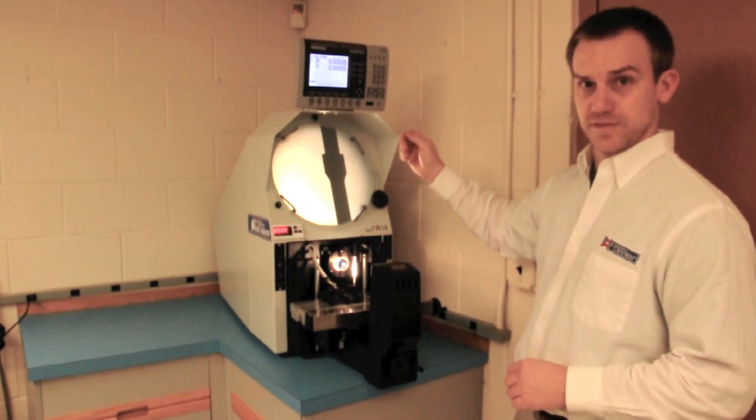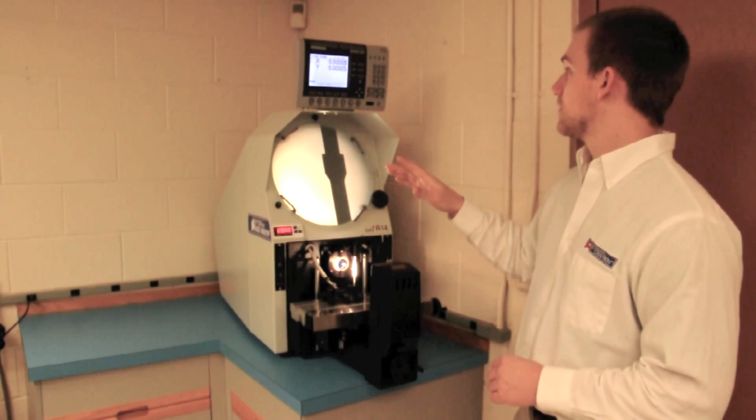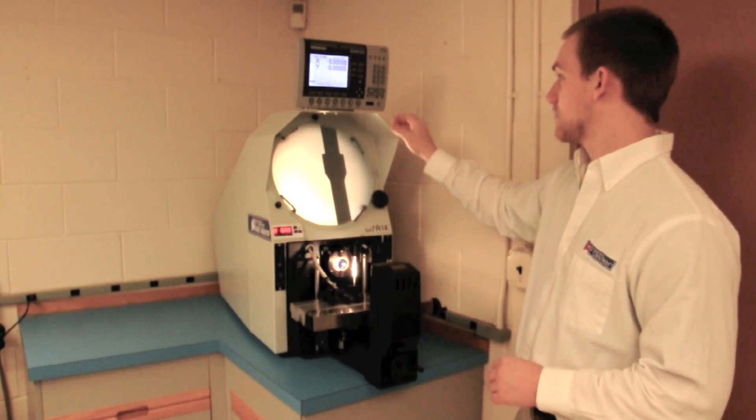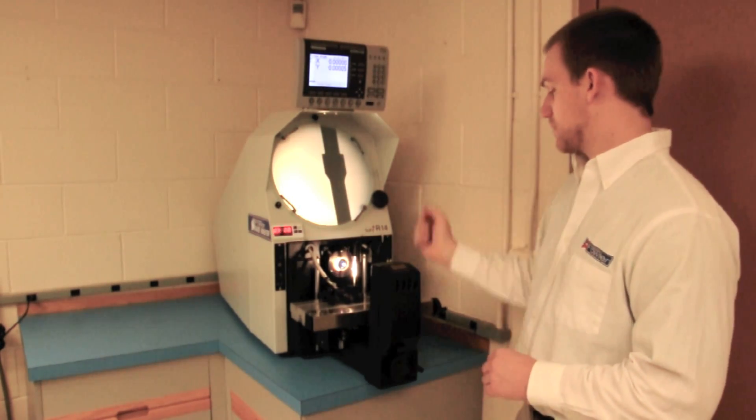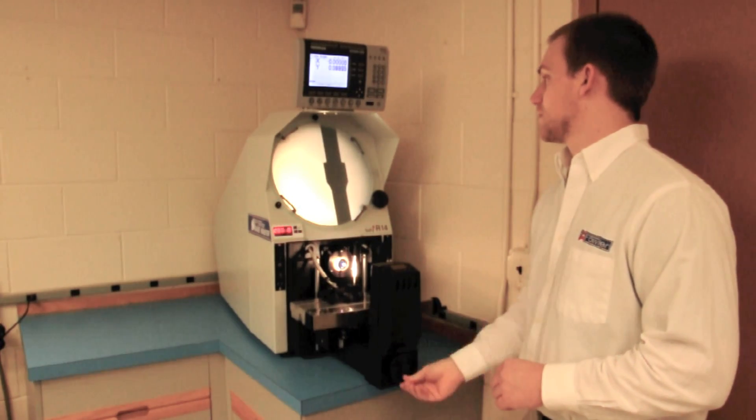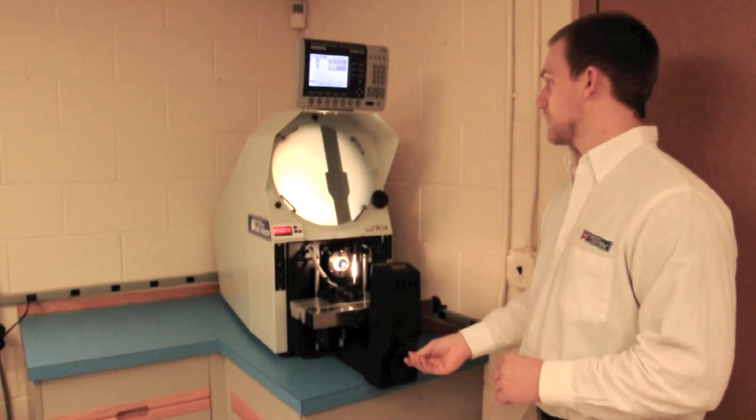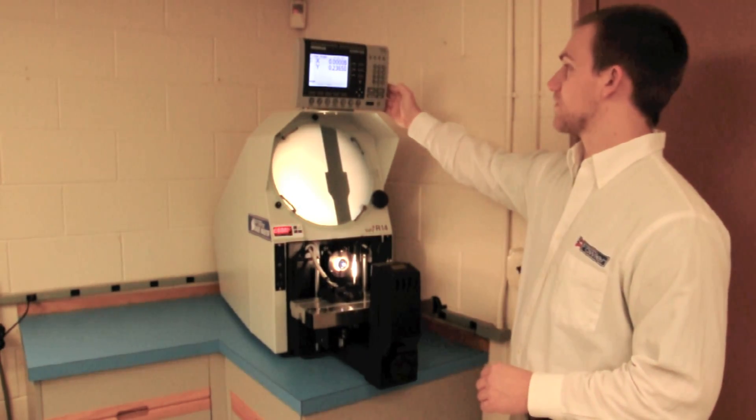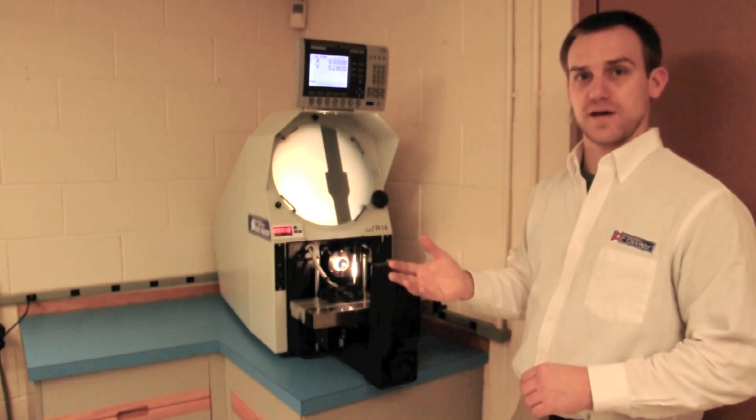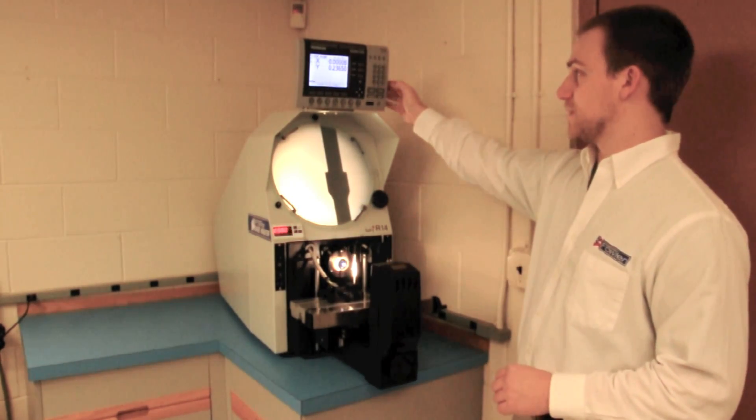An angle measurement takes two sets of datum points. So we're taking the first set now. There's one. The other end of this line. There's the second. Whenever you finish taking a set of data points, we hit the finish button.